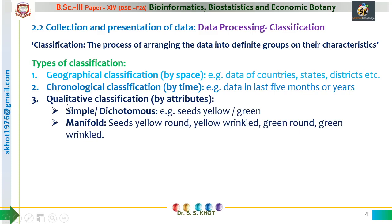The next method is called qualitative classification. It is based on attributes. Qualitative classification may be a simple classification, also called dichotomous classification. In this classification, a single character is considered for grouping the data. For example, we can consider the color of seeds — the color may be yellow, green, or some other color. So a single parameter is considered for grouping of the data, hence it is called simple or dichotomous classification.